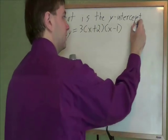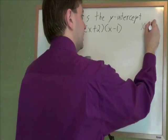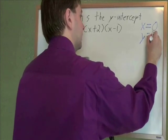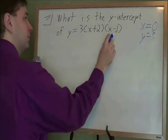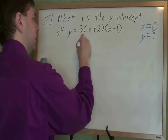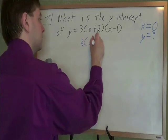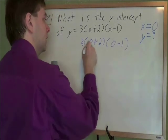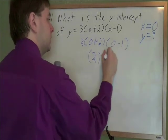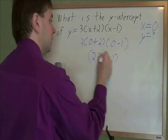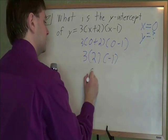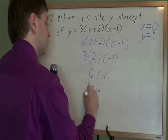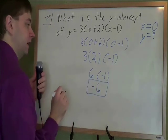Any time a problem asks for a y-intercept, that means that x is equal to 0, and they want to know what y is. So all we have to do with this problem is plug in 0 for x. So we have 3 times 0 plus 2 times 0 minus 1. 0 plus 2 is 2, 0 minus 1 is negative 1. The 3 stays there. 3 times 2 is 6, and 6 times negative 1 is negative 6. In this case, the y-intercept is negative 6.